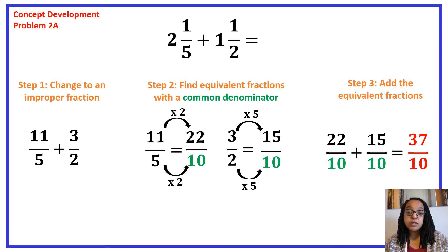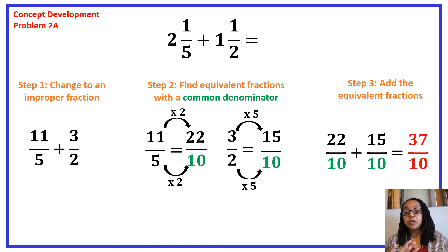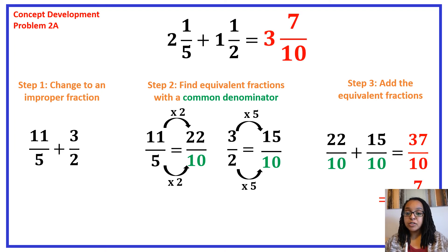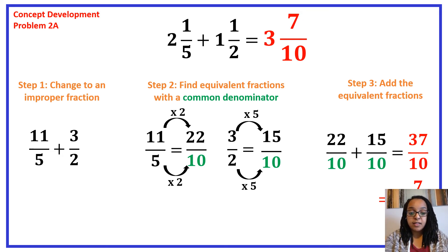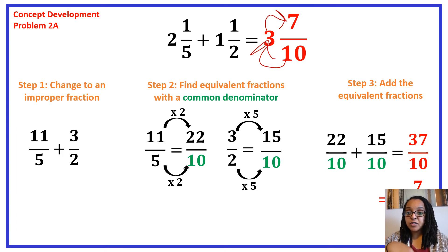37 tenths is an improper fraction, and we never leave our answers as an improper fraction. Change 37 tenths to a mixed number by doing long division: 37 divided by 10 is 3 with a remainder of 7. So the mixed number becomes 3 and 7 tenths. You can check your work: 10 times 3 is 30, plus 7 is 37 — giving you 37 tenths. The mixed number is correct.